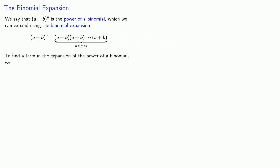To find a term in the expansion of the power of a binomial, we need to do two things. First, determine which factors we need to choose, and then determine the number of ways we can choose those factors.